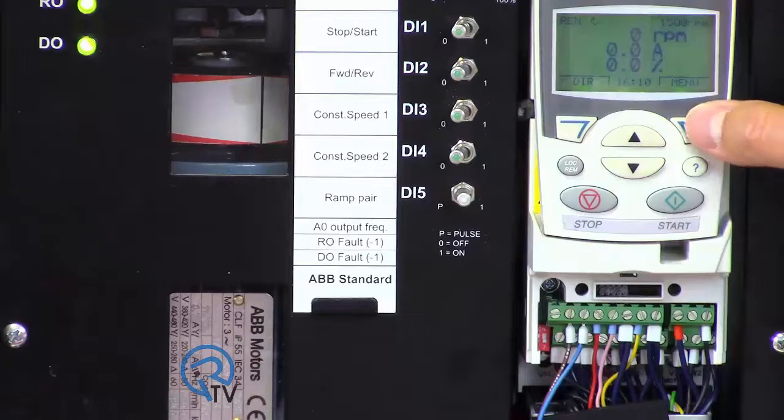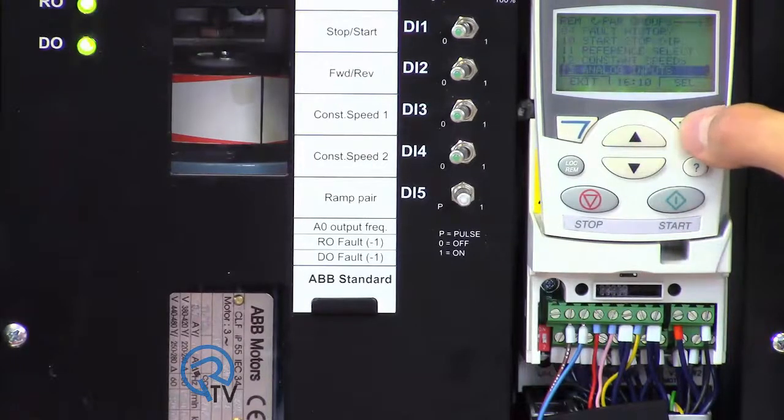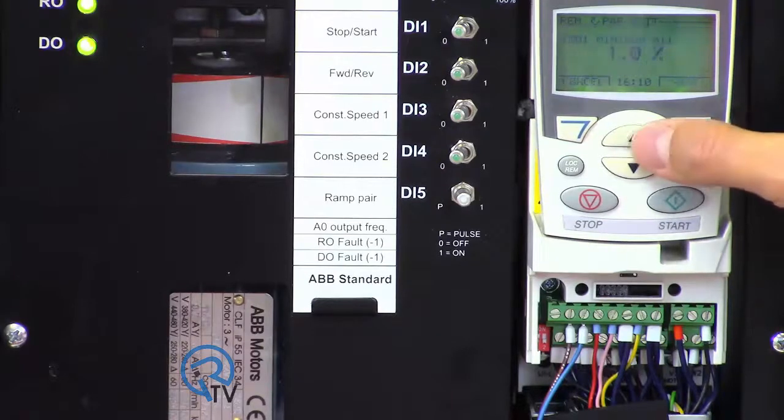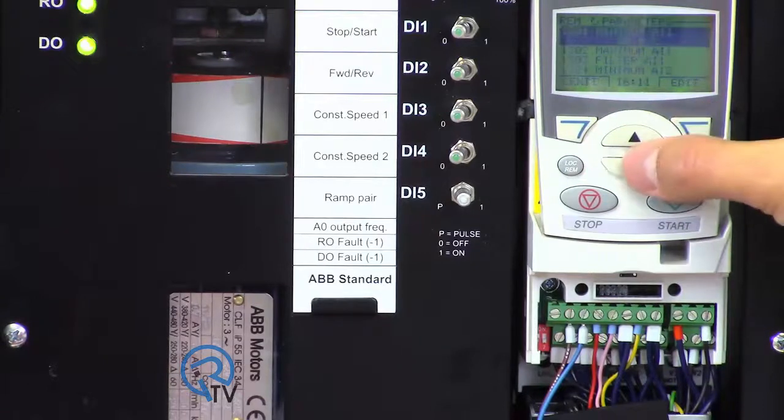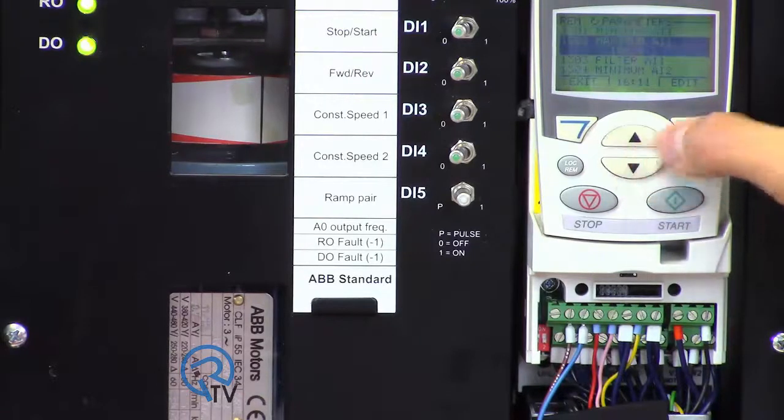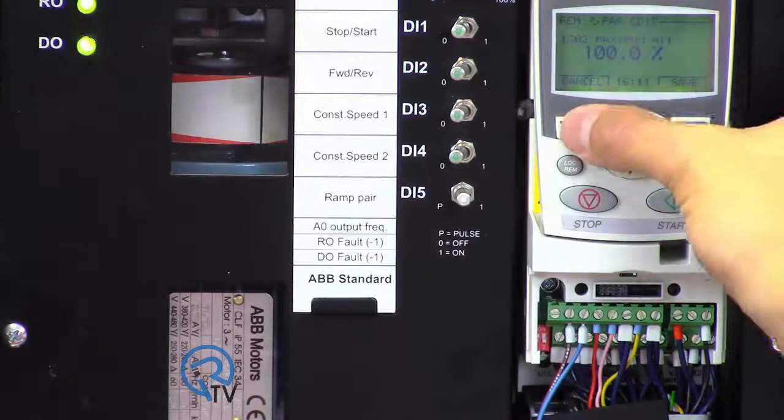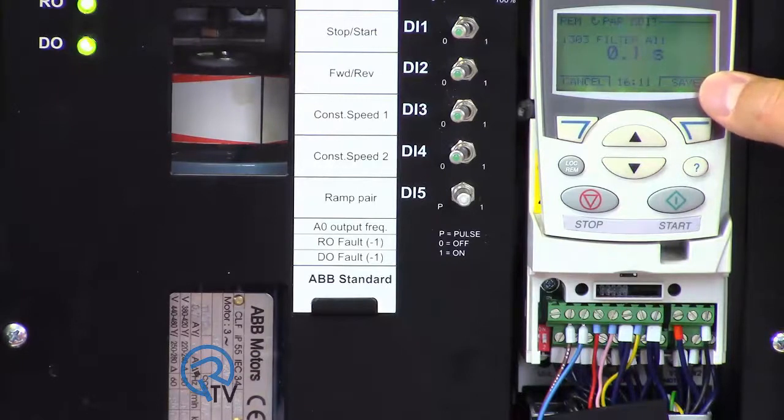Using the keypad, navigate to parameters, analog inputs, group 13. Our minimum input is 4 milliamps, so we set parameter 1301 to 20%. Our maximum input is 20 milliamps, so we leave parameter 1302 at 100%. If we wanted to filter out noise, we could do that with parameter 1303.